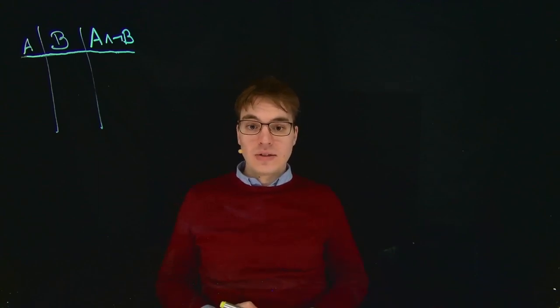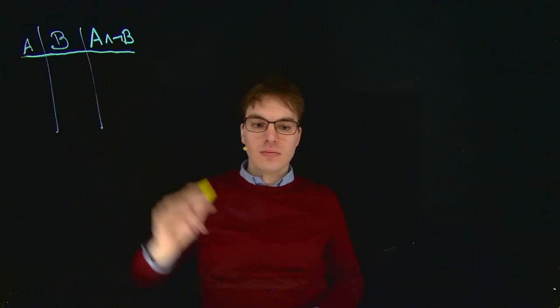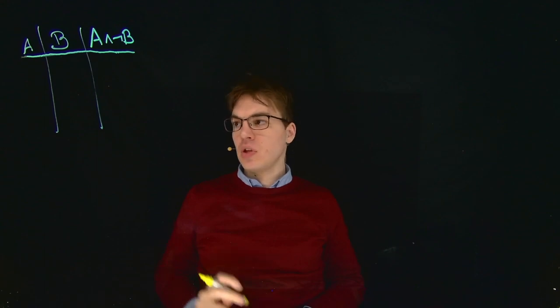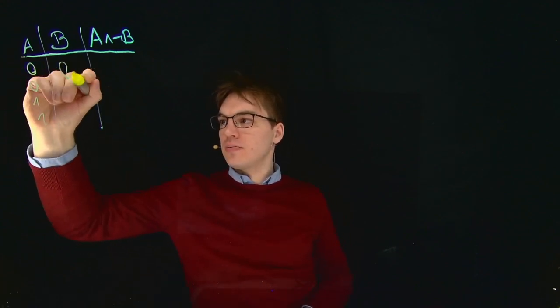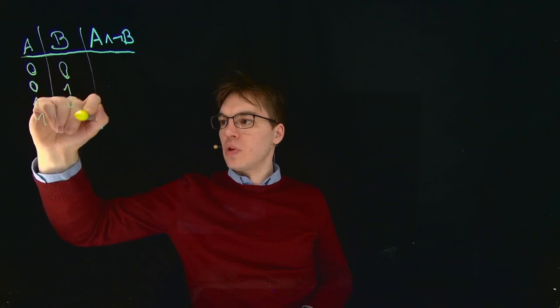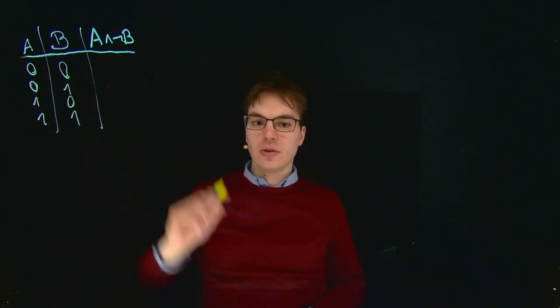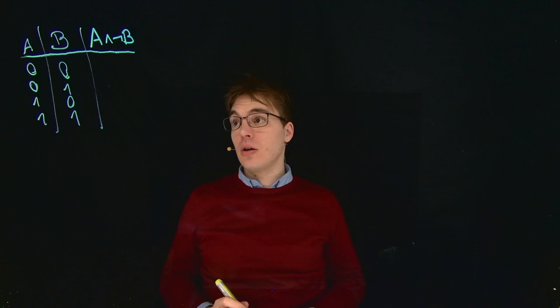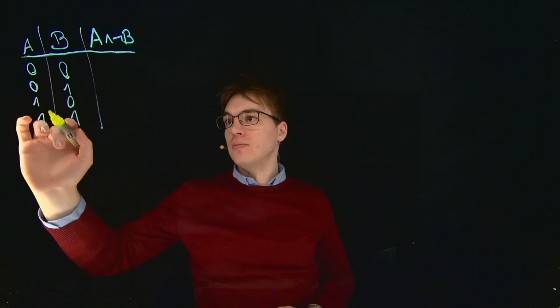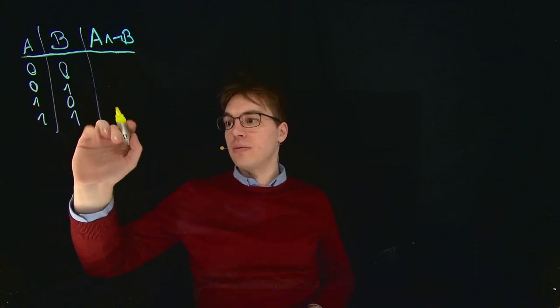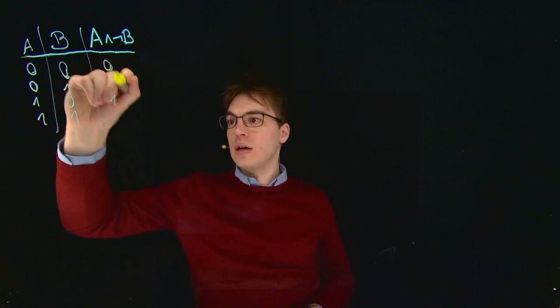We want to express a boolean formula using a single perceptron. So first let's have a look at our truth value table. And we can see that this expression, A and not B, is only true for the following case: A must be true and B must be false. So here we get a 1, otherwise a 0.